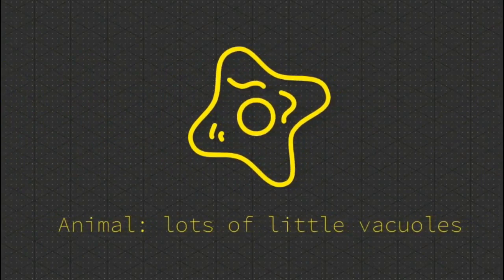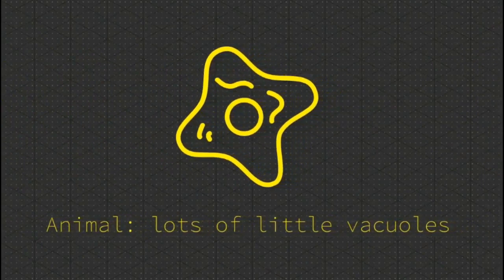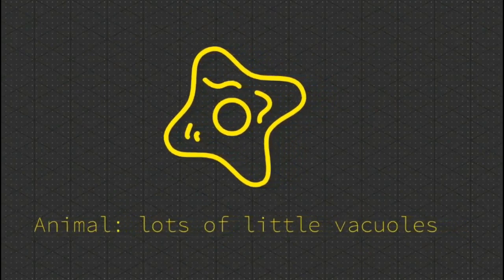Animal cells are a bit different. They have vacuoles, but they are little and scattered around the cell.